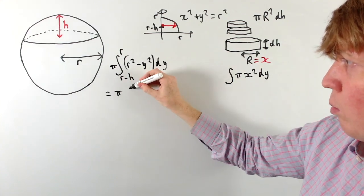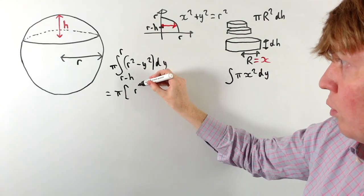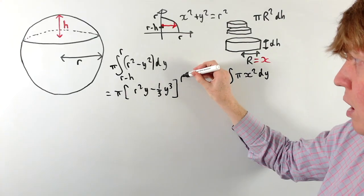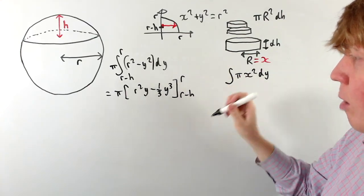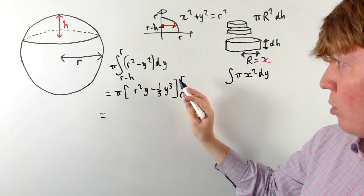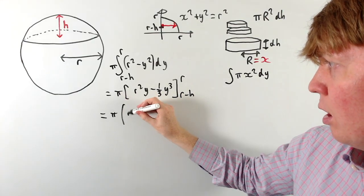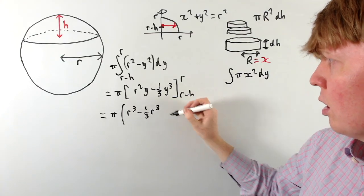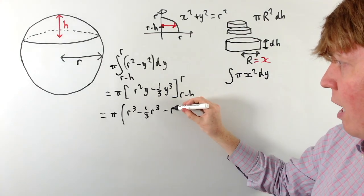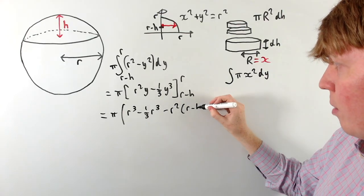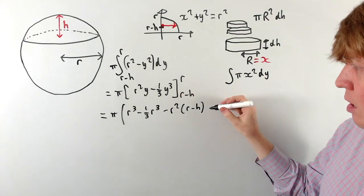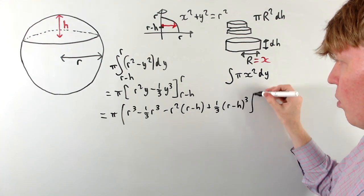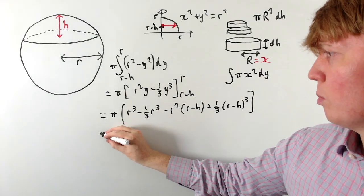Integrating with respect to y, we get π times r²y − (1/3)y³, evaluated at r and at r − h. Substituting in r gives π times r³ − (1/3)r³. For the r − h terms, we subtract r²(r − h) and then add (1/3)(r − h)³. All of this is inside brackets multiplied by π.